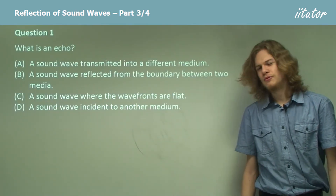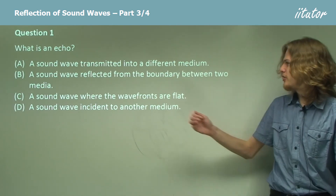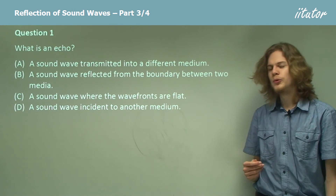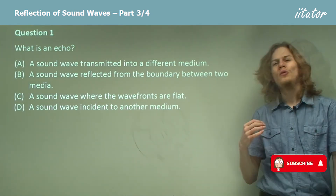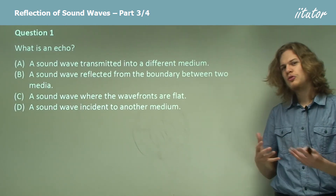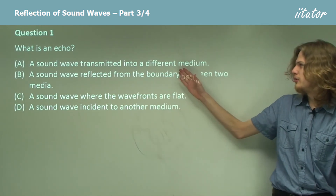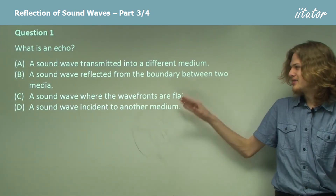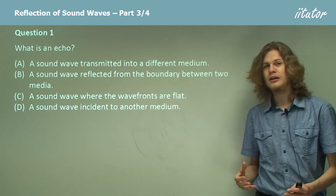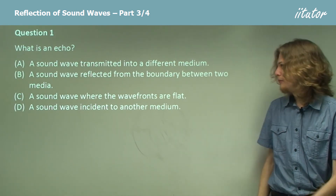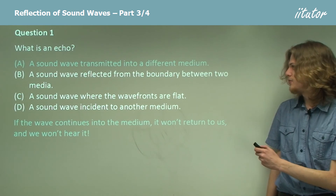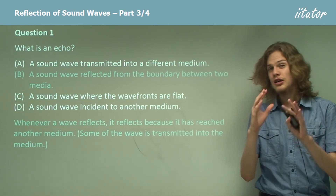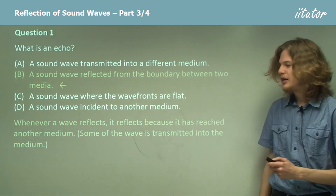Quiz question: What is an echo? The options are: A) a sound wave transmitted into a different medium, B) a sound wave reflected from the boundary between two media, C) a sound wave where the wave fronts are flat, or D) a sound wave incident to another medium. A sound wave transmitted into a different medium would never reach us. Options C and D could just be ordinary sound waves — the wave we hear initially, not a copy of it. The correct answer is B. Whenever a wave reflects, part of it is transmitted and part is reflected, and this reflection is what we hear as an echo.